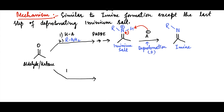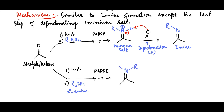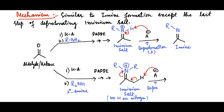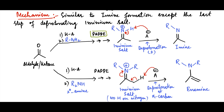When the same aldehyde or ketone is treated with secondary amine in the presence of acid, similar steps operate to form the iminium salt. This iminium salt doesn't have any hydrogen on nitrogen. Therefore, a base deprotonates the alpha carbon to balance the positive charge on nitrogen to form an enamine. The sixth step of deprotonation at nitrogen or at alpha carbon gives imine or enamine respectively.